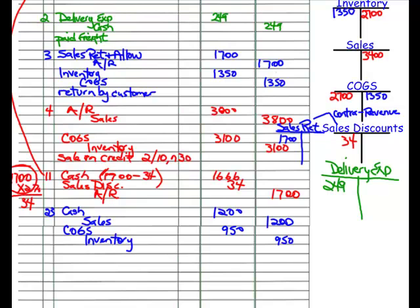The last transaction on the 28th: the customer from February 4th paid the amount owing, which is $3,800. Before recording the payment, we check whether they're paying within the discount period. We gave them 10 days to get a 2% discount, but they're paying on day 24, so they do not qualify. They have to pay the full net amount of $3,800. We debit our cash account for $3,800 and credit accounts receivable for $3,800 — there's no early payment discount or sales discount to record.